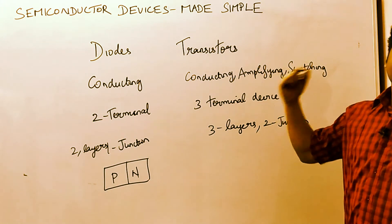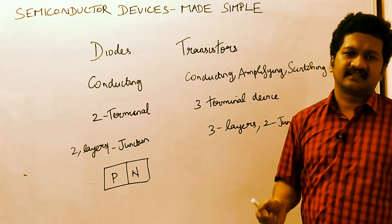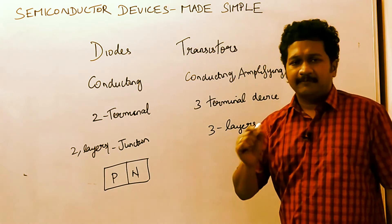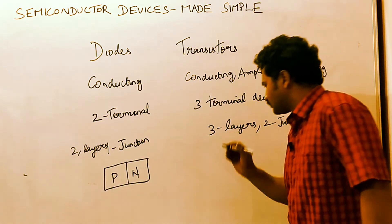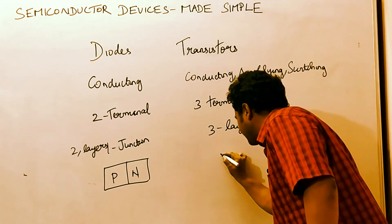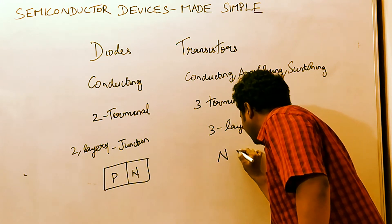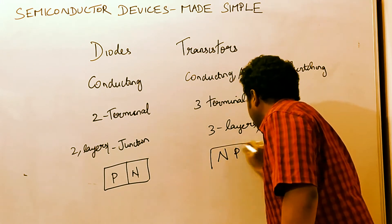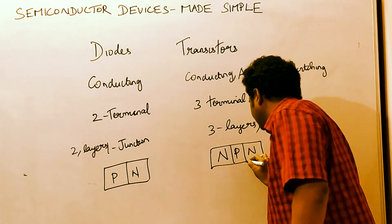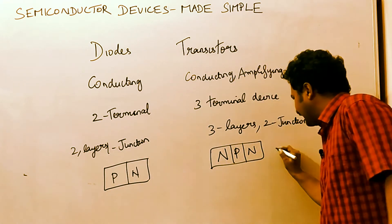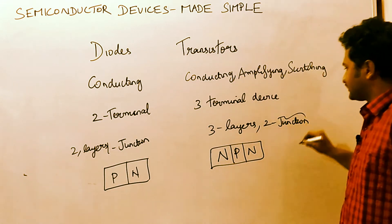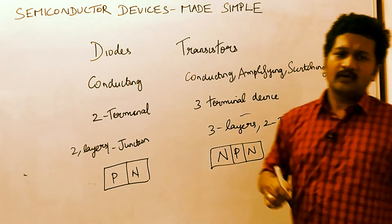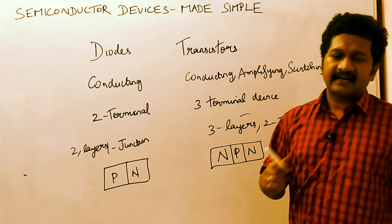The first classification of a transistor I was telling about is BJT — Bipolar Junction Transistor. The first classification among the three-layer types is the NPN transistor. As you can see, there are three layers and two junctions.